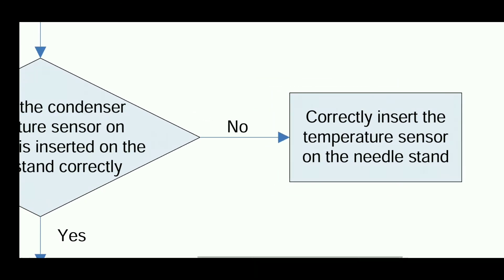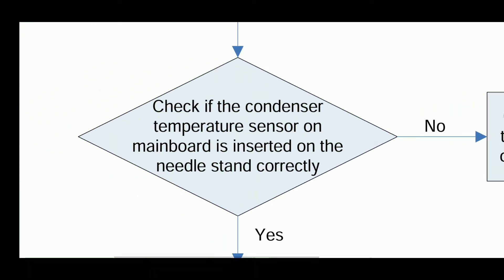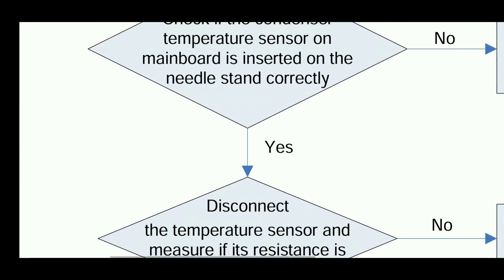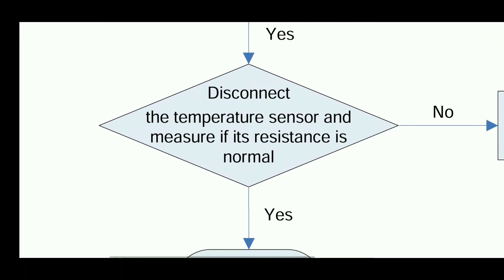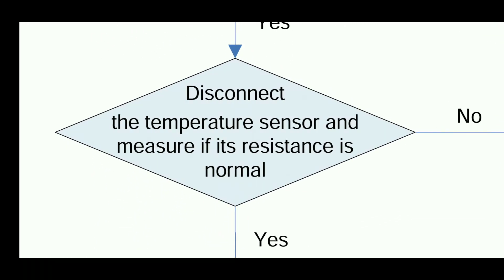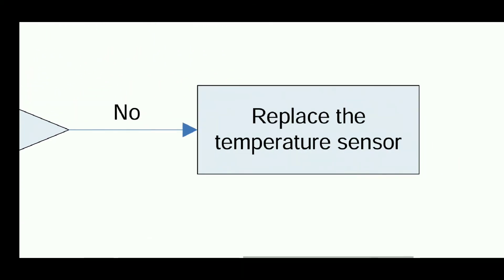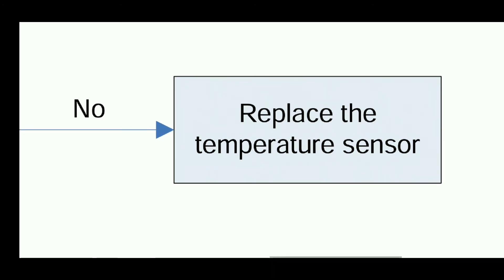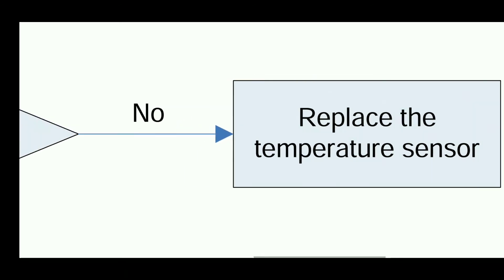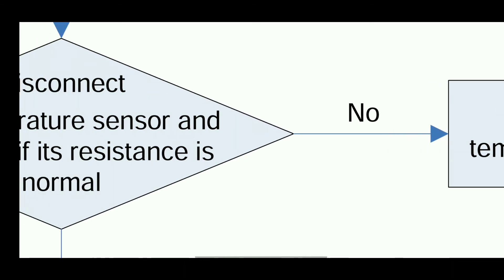If not correctly inserted, then correctly insert the temperature sensor on the needle stand. You can also disconnect the temperature sensor and measure the resistance value. The resistance value should be 50 kohms for the condenser temperature sensor. If the value is not correct, replace the temperature sensor.